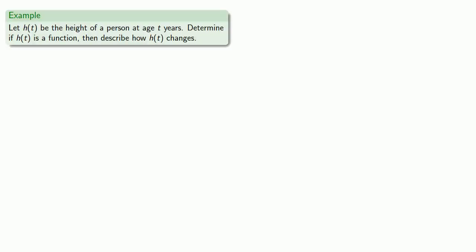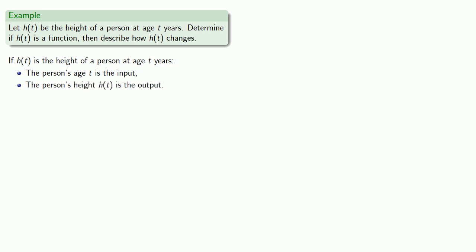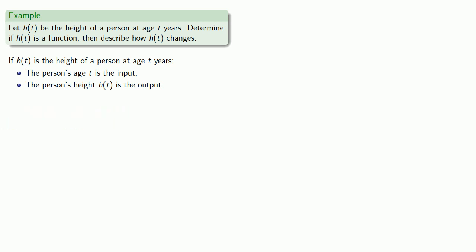So let's try to graph a function. Let h of t be the height of a person at age t years. Determine if h of t is a function, then describe how h of t changes. The person's age t is the input, and the person's height h of t is the output. At any given age, a person can only have one height, so height is a function of age.